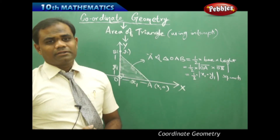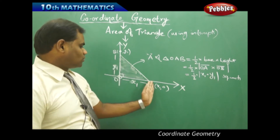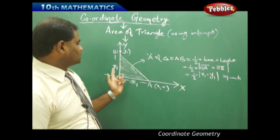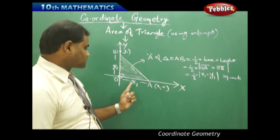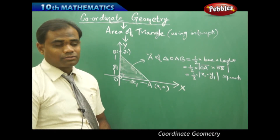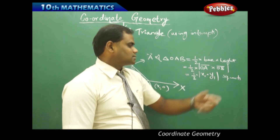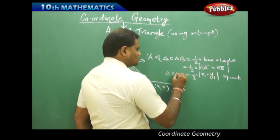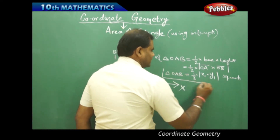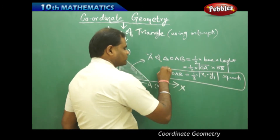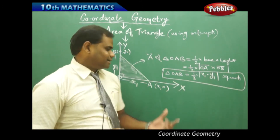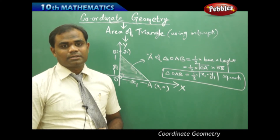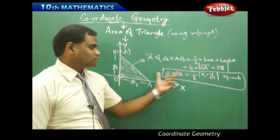So when generally the line is given in intercept form, the area of the triangle is half times x-intercept into y-intercept under modulus, in square units. This is how we get the area of triangle OAB by connecting the intercepts with the area.